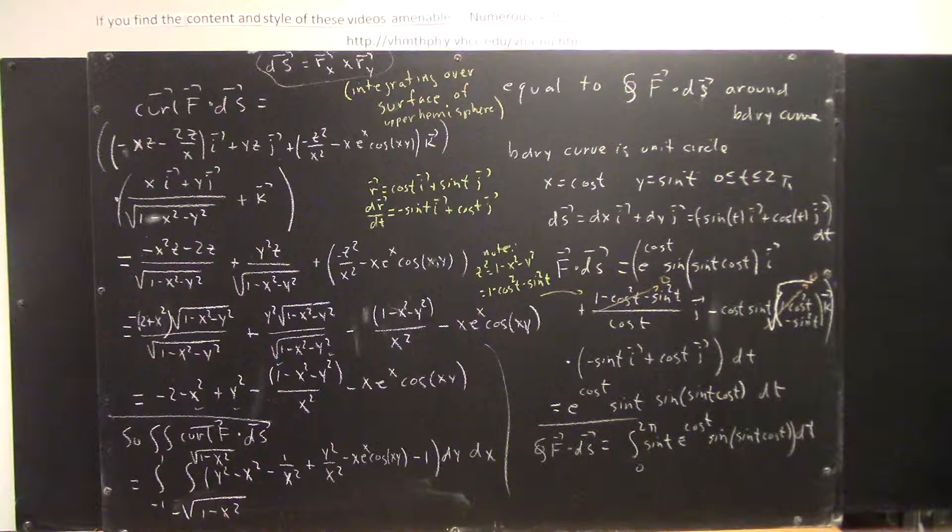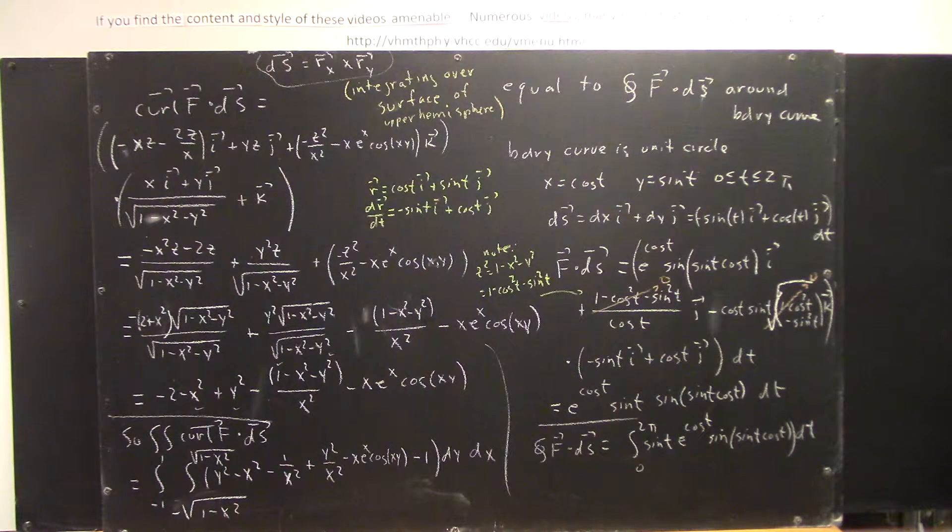y going from negative square root of 1 minus x squared to the square root of 1 minus x squared. And, right here, is the curl of f dot n.